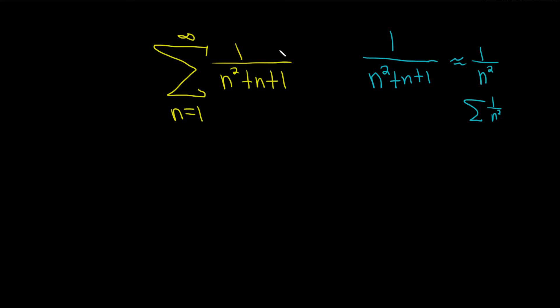So our series behaves like a p-series and should converge like a p-series. Since this one converges, our series should also converge. We just have to justify that formally, so solution.